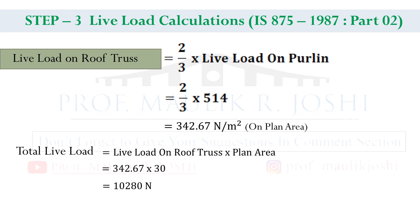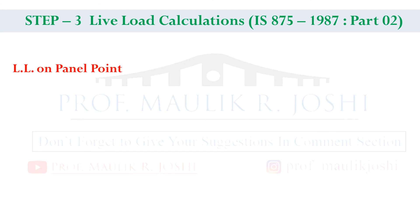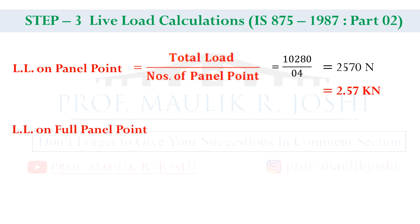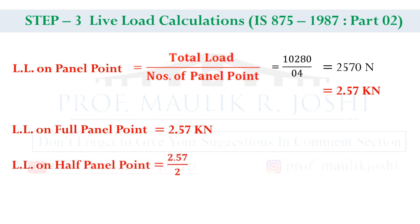Now we calculate the live load on panel points, similar to how we calculated dead load. Live load on panel point is equal to total live load divided by number of panel points. Total live load is 10,280 newton and number of panel points is 4, so the answer is 2,570 newton, which is approximately 2.57 kilo newton. Live load on full panel point is equal to 2.57 kN and live load on half panel point is equal to 2.57 divided by 2, which is 1.28 kilo newton.